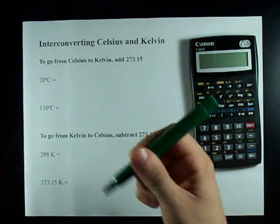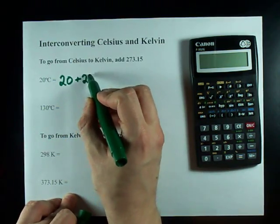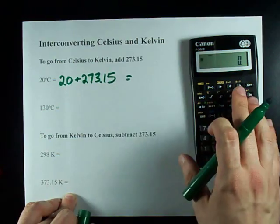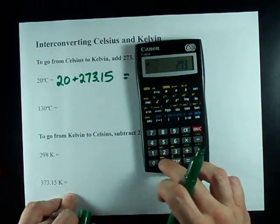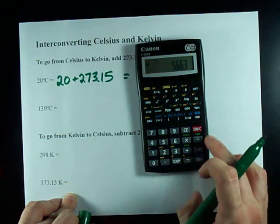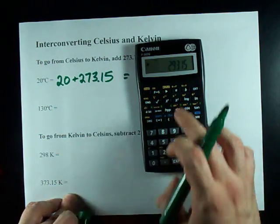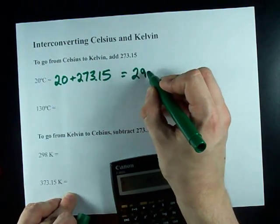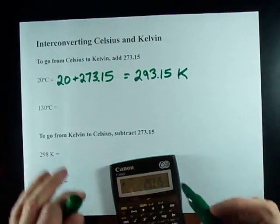So, 20 degrees Celsius in Kelvin is simply 20 plus 273.15. I'll do that on my calculator to show you. 20 plus 273.15 gives me 293.15 Kelvin. Piece of cake.